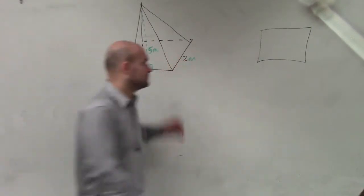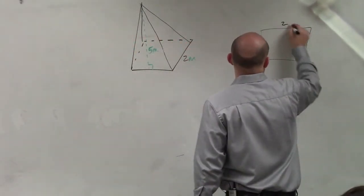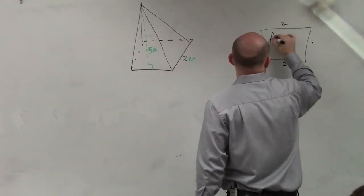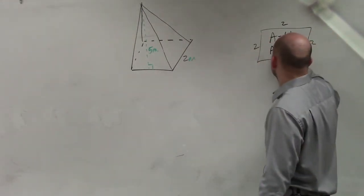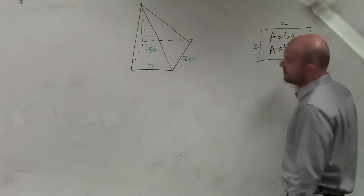So if that's 2, everything's 2. So 2, 2, 2, 2. So the area of this base is just going to be base times height, which is 4 meters squared.